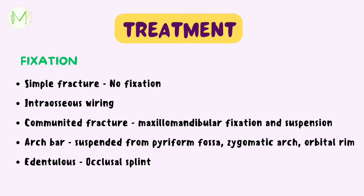If fixation is needed, intraosseous wiring is most commonly used. In case of comminuted fracture, maxillomandibular fixation along with suspension wires is used. An arch bar of the maxilla should be suspended from the piriform fossa, zygomatic arch, and orbital rim. In case of edentulous patients, an occlusal splint is used for fixation.